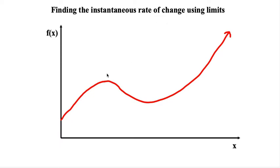So, finding the instantaneous rate of change using limits. Here's what we're going to do. We're going to pick a point, let's pick this point right here. We're going to say that we want to find the derivative at that point. That is, we want to find out what the slope is at that point.